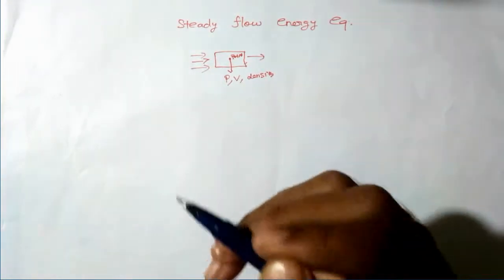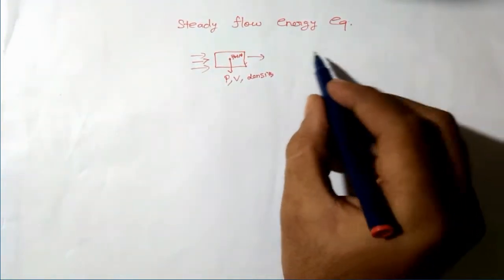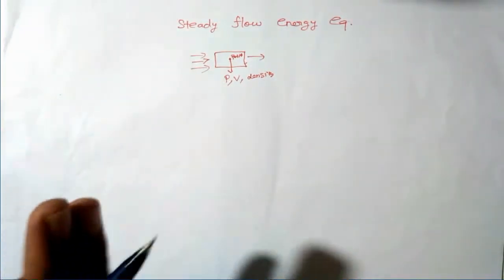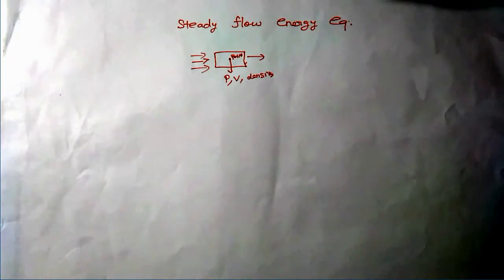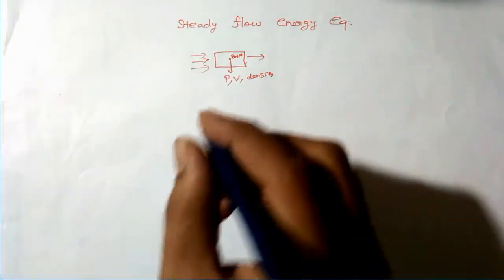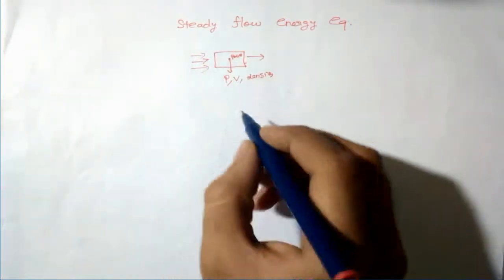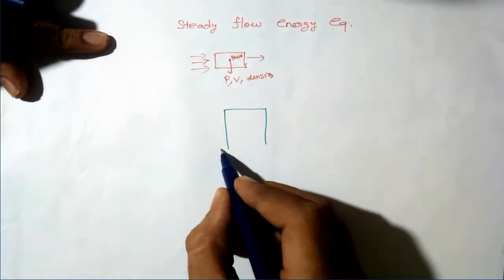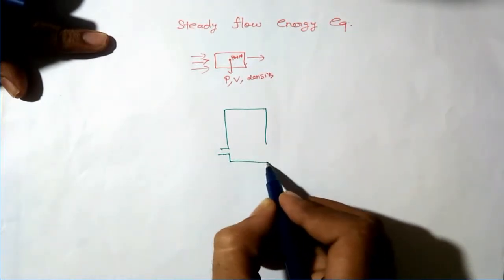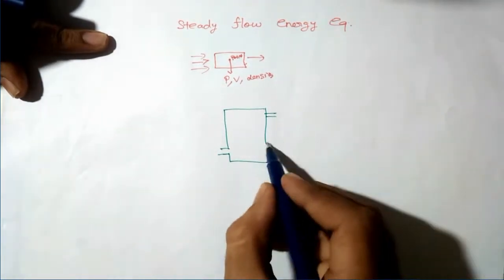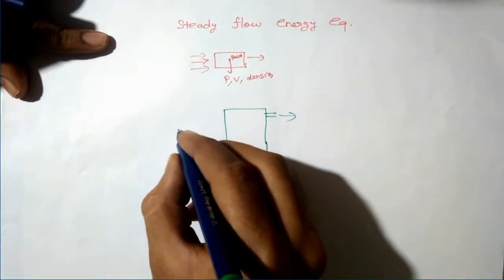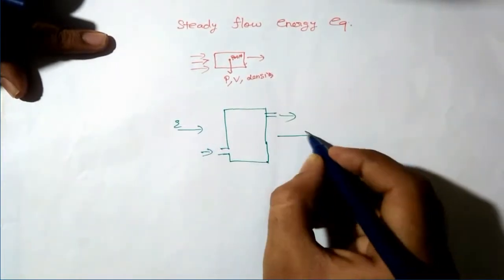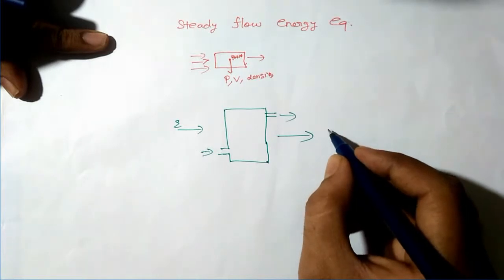This steady flow energy equation balances the inlet energy and outlet energy. From the first law of thermodynamics, we know that the total energy entering the system is equal to the total energy getting out of the system.